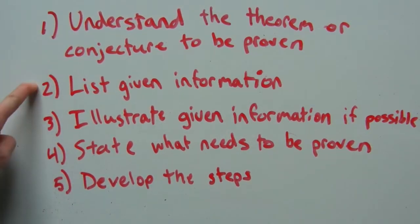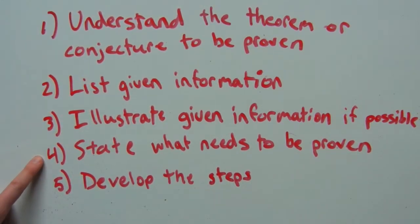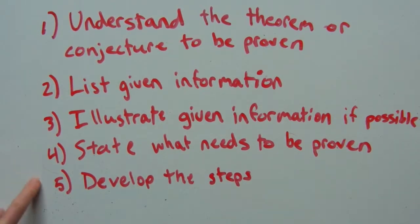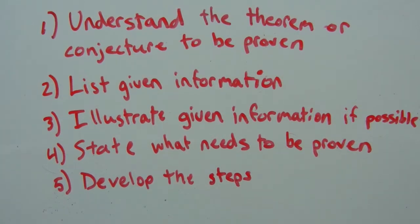And finally, step five: develop the steps. So to recap — understand the theorem or conjecture to be proven, list the given information, illustrate the given information, state what needs to be proven, and then develop those steps. Developing the steps will vary depending on what you're trying to prove. Now let's utilize these steps and do our first proof.